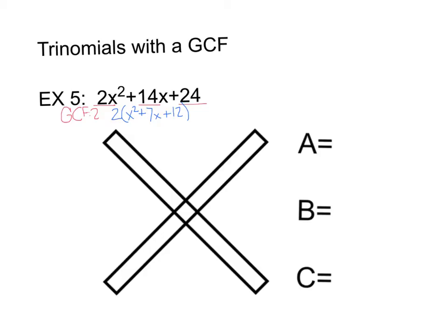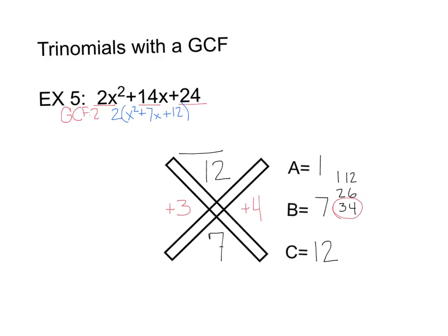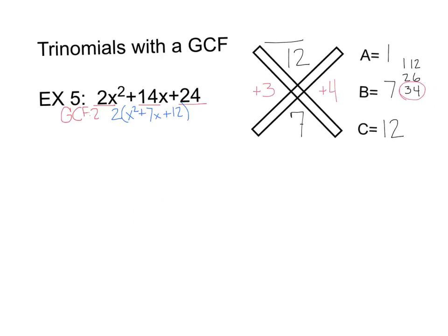Now bringing up our x method, the a value of our new equation is 1, b value is 7, c value is 12. Our top is a times c, which is 12, and our bottom is b, which is 7. Looking at factors of 12: 1 and 12, 2 and 6, 3 and 4. We can see that 3 and 4 multiply to give 12 but add to give 7. So we have positive 3 and positive 4.